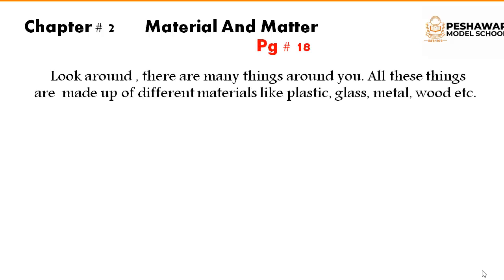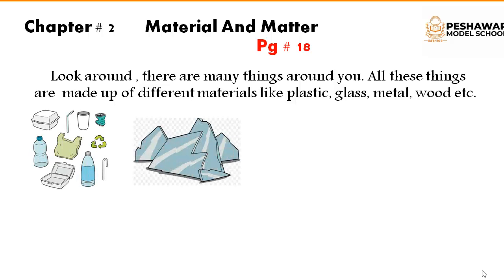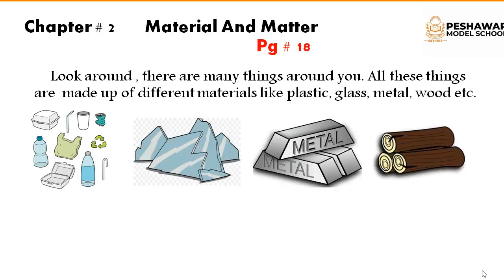First of all, we will discuss material. Dear students, look around in your room — you will observe different types of things and these things are made up of different types of materials. For example, a chair is made up of wood. So chair is a thing and wood is its material. All these things around you are made up of different materials, like plastic, glass, metal, wood, etc.